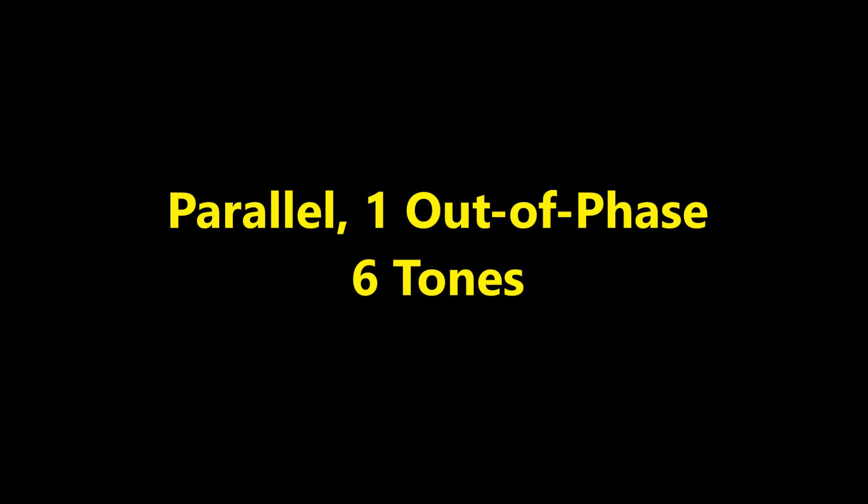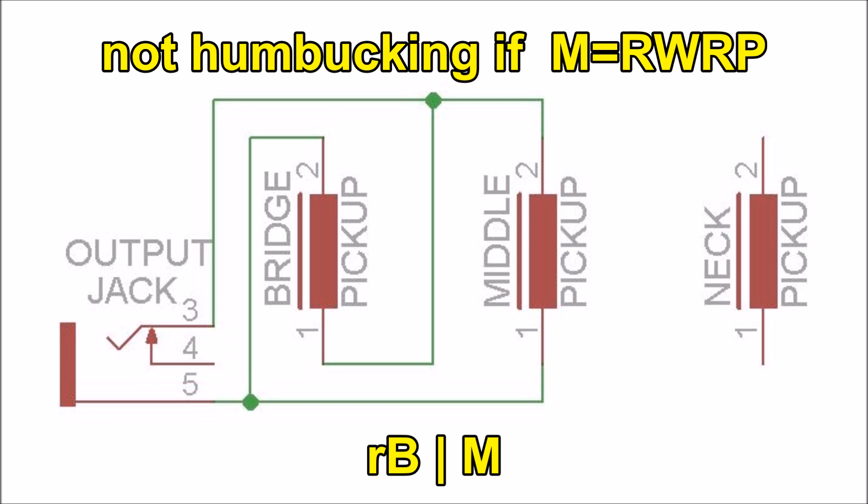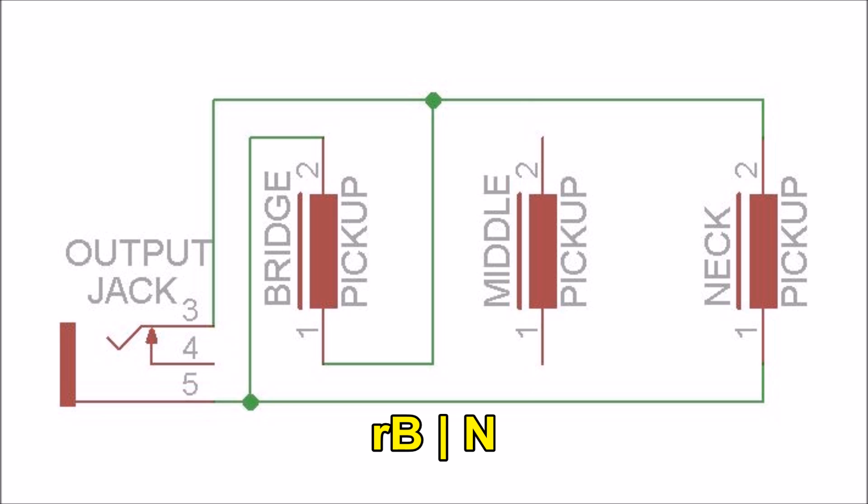Parallel, 1 out of phase: 6 tones. These tones are produced with a noise cancelling humbucker effect. Two of these are already integrated in the 5 position pickup selector switch in its 2nd and 4th positions, connecting the middle pickup to either the neck or bridge pickup by making the middle pickup reverse wound.